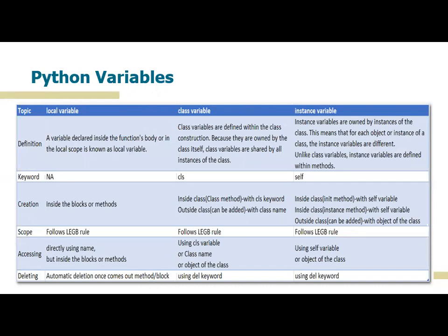Instance variables are owned by the instances of the class. This means that for each object or instance of a class, the instance variables are different. Unlike class variables, instance variables are defined within the methods.